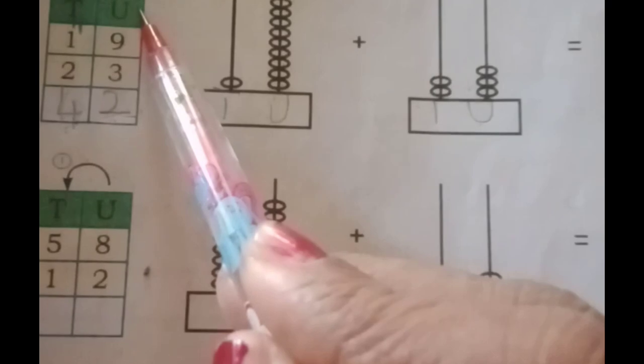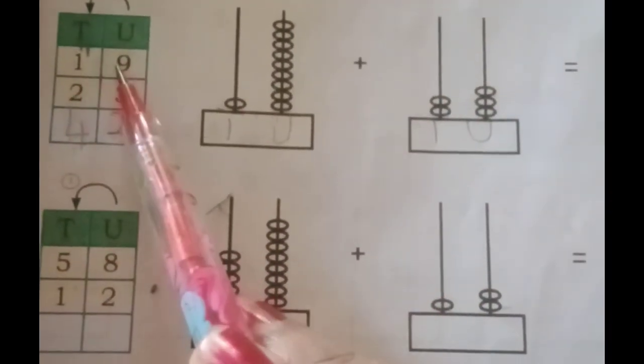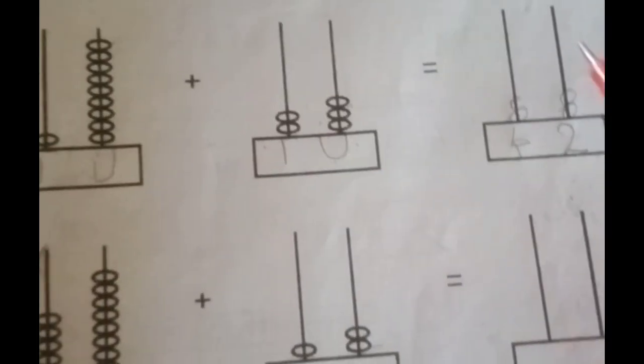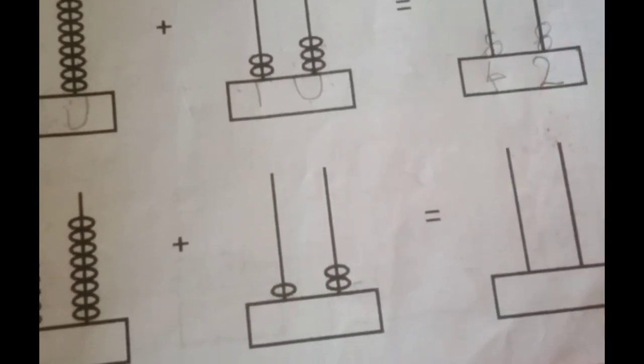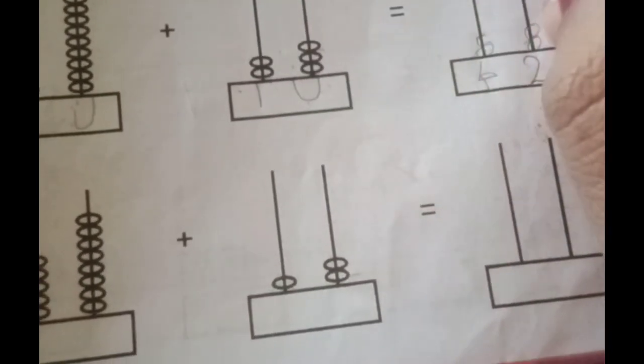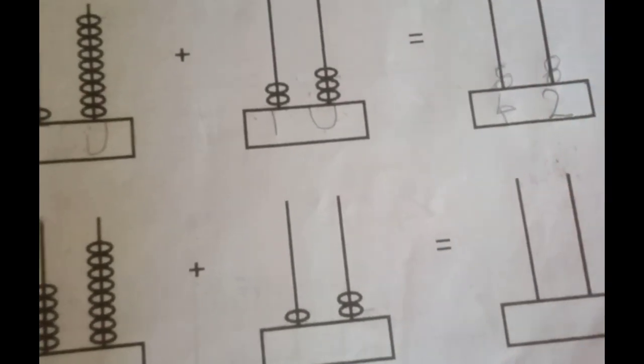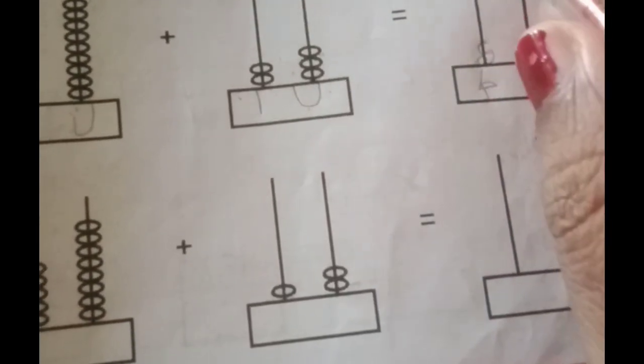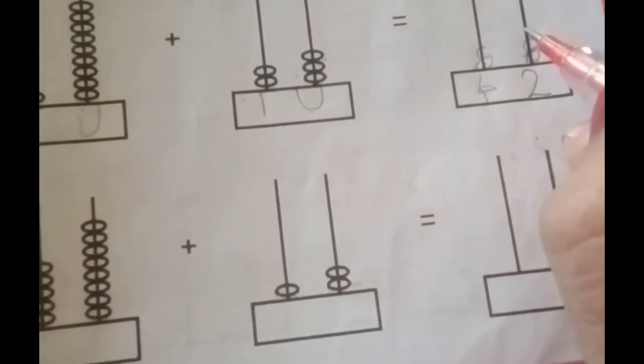Here also unit 9 plus 3. 9 plus 3 is equal to 12. So 12 means we have to write only 2 in unit place. 2 on unit place. So 1, 2.